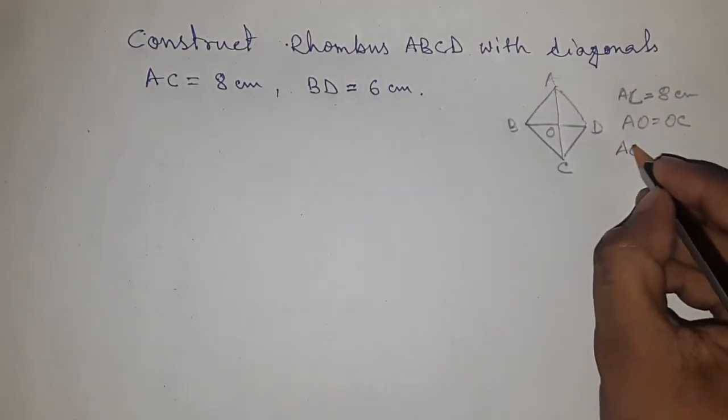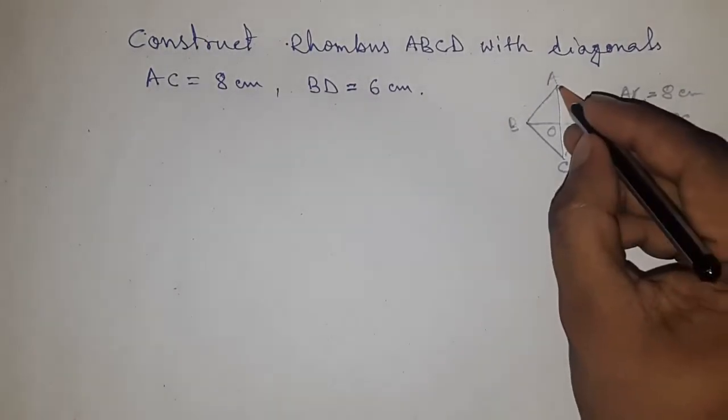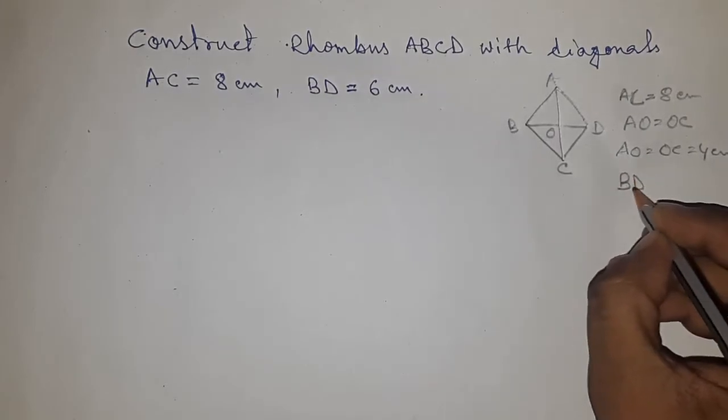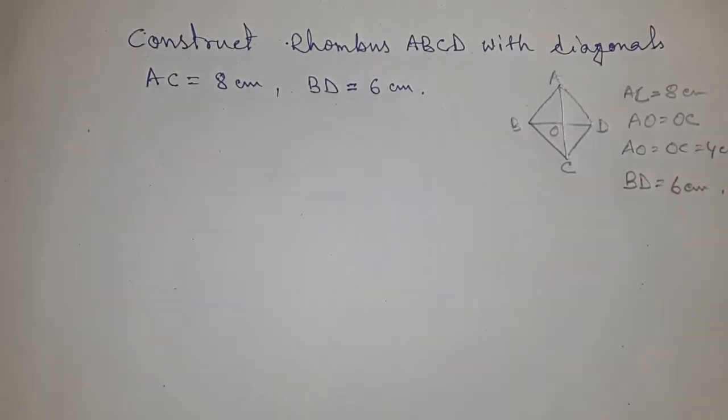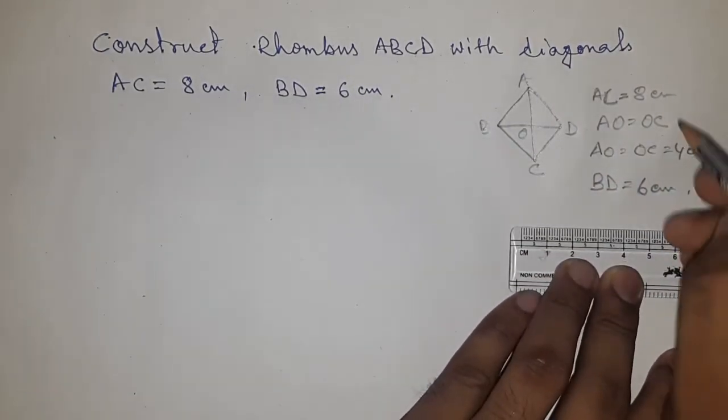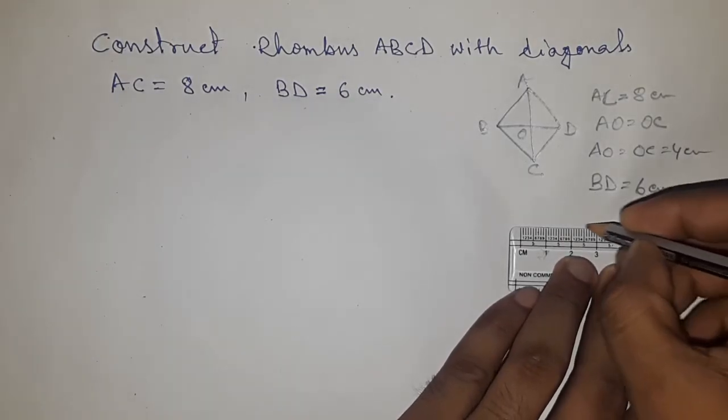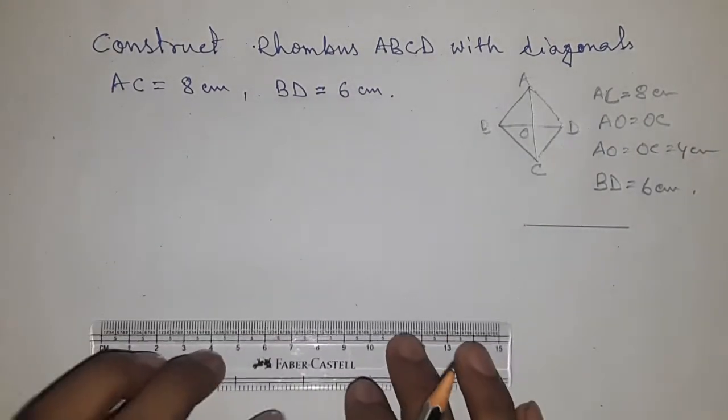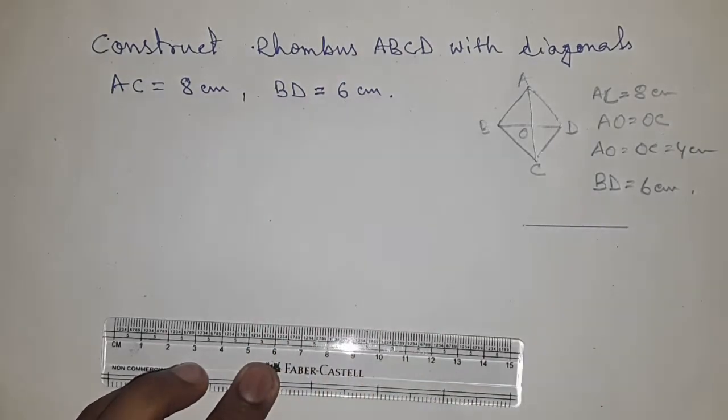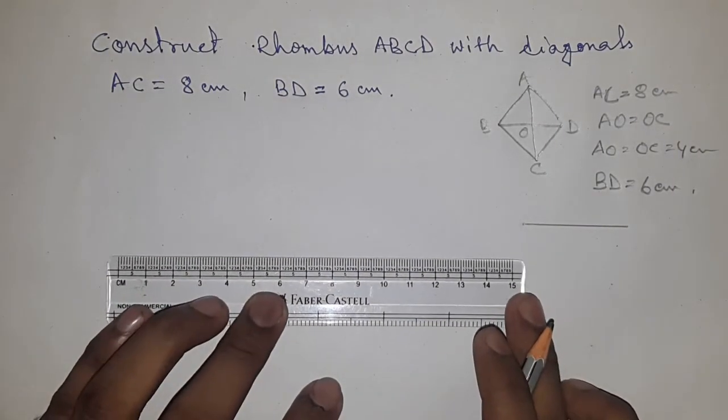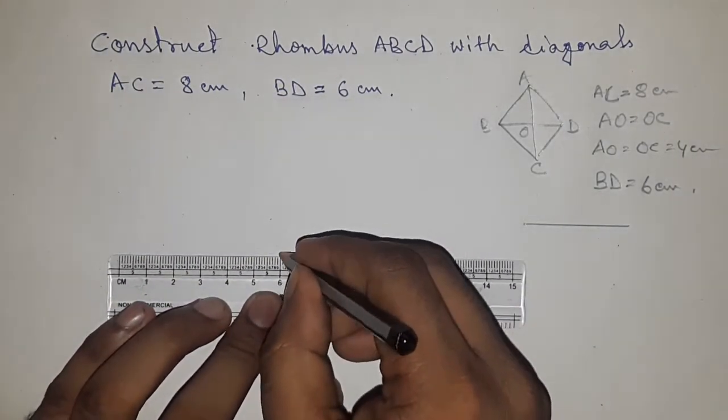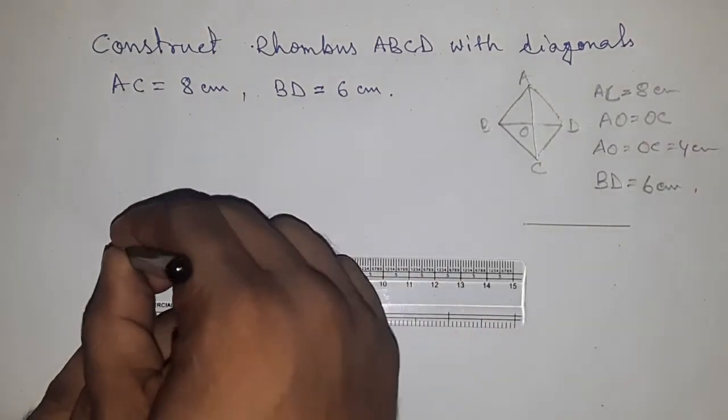So AO equal to OC equal to 4 centimeter. And the diagonal BD equal to 6 centimeter. Drawing the side 4 centimeter here. Next, drawing the diagonal BD here first. So this is 6 centimeter diagonal BD.